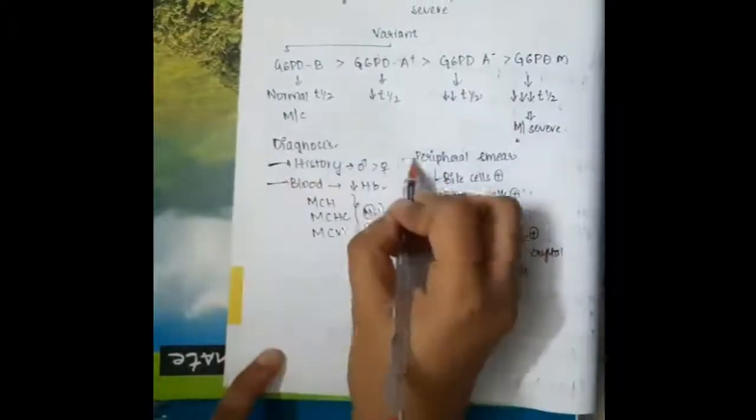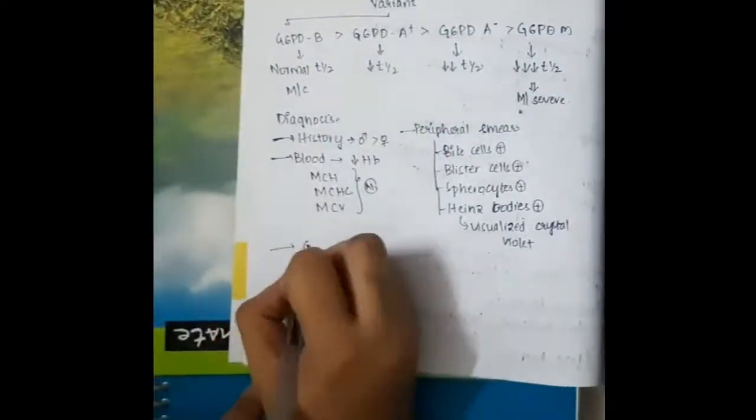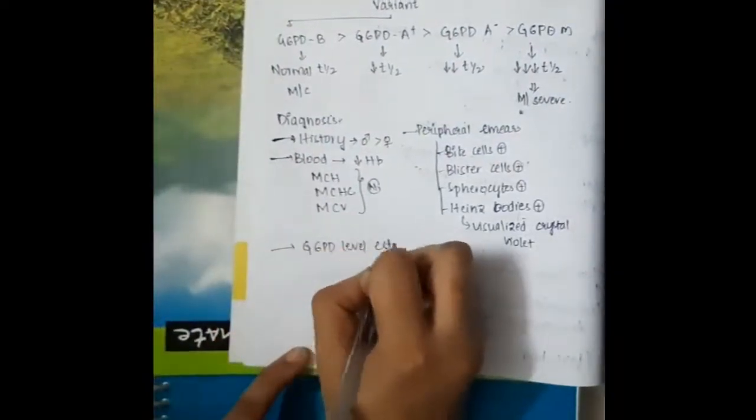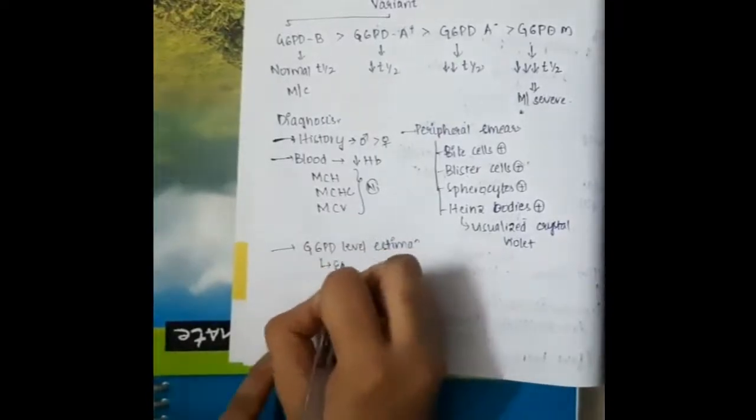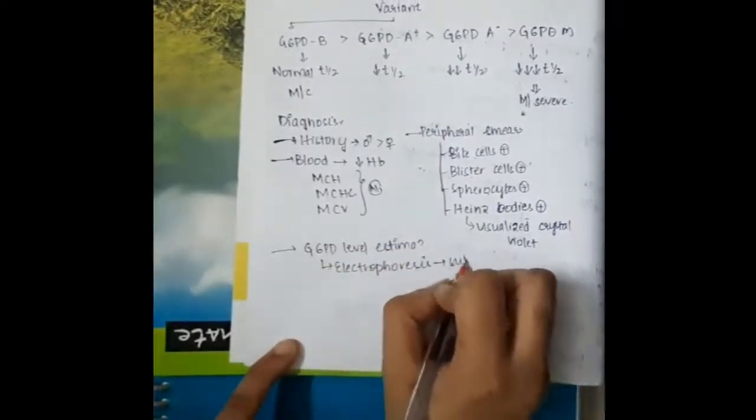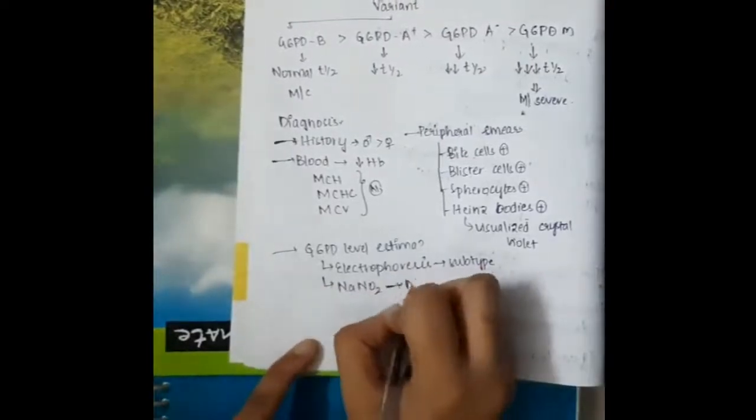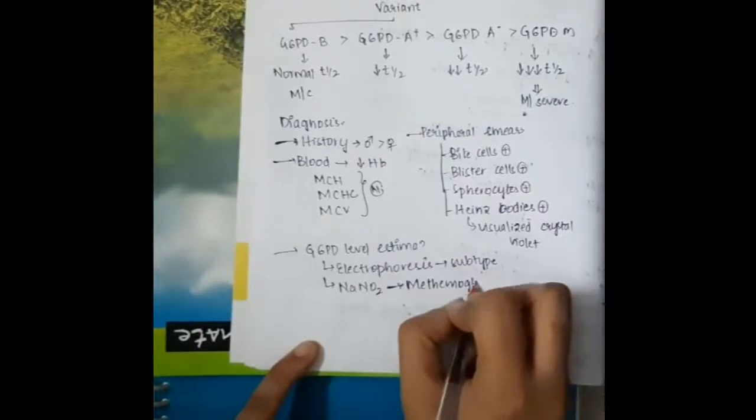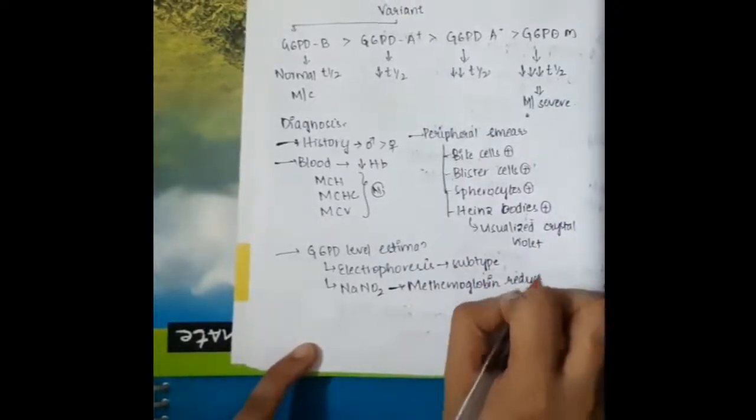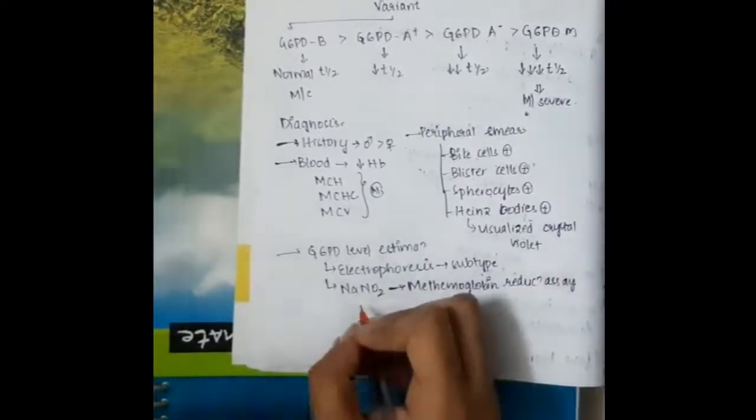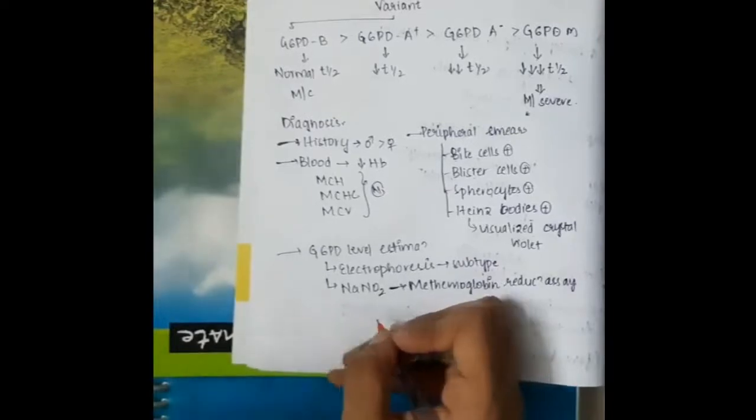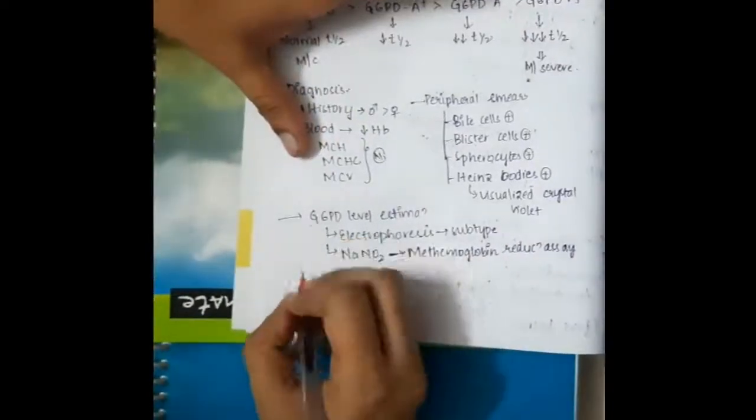The best diagnosis is to assess the G6PD level estimation. This is done by electrophoresis. This will help us to grade the subtype of G6PD. We can also do methemoglobin reduction assay for G6PD level estimation.